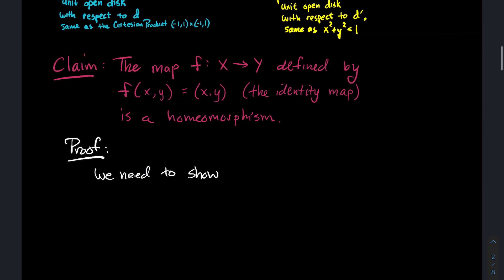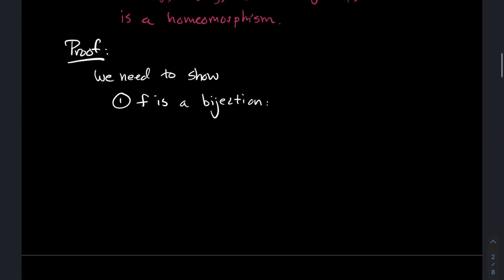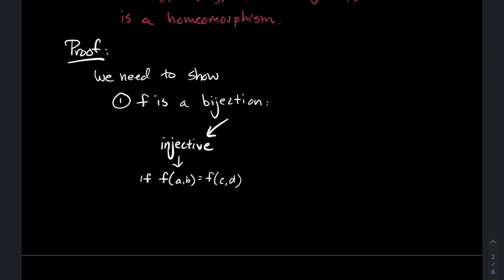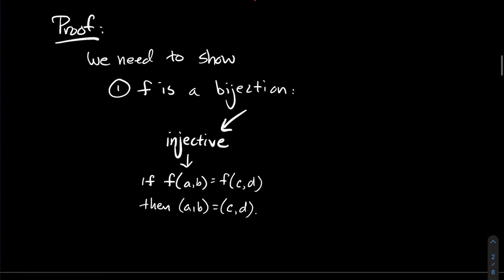Here's our proof. To show something is a homeomorphism from the definition, there are three things to show. First, F is a bijection — starting with injectivity. If F(a, b) = F(c, d), then since F just returns the same ordered pair, we get (a, b) = (c, d). So F is injective.